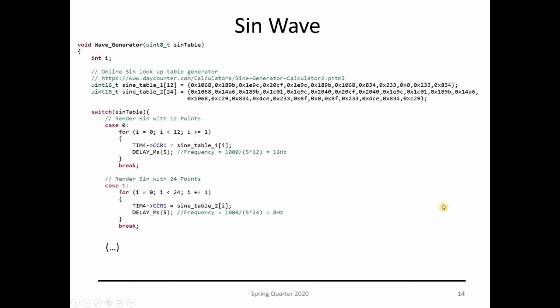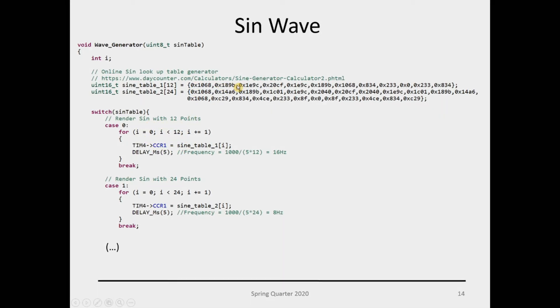The code is pretty much this one. What we do is I have here two tables, one a lookup table with values for 12 points and another one for 24 points for a sine wave. Pretty much all you need to do is call this function wave generator, pass the value zero, and it's going to render the sine wave just following those points.